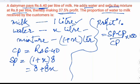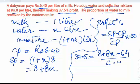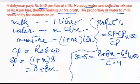Now the profit percentage is equal to 37.5. This is equal to the selling price, that is 8 plus 8x, minus 6.4 cost price upon 6.4 into 100.